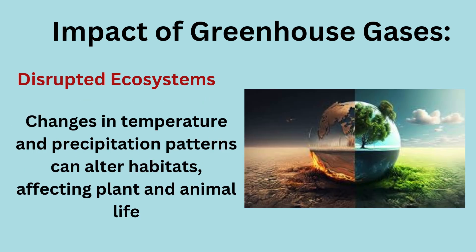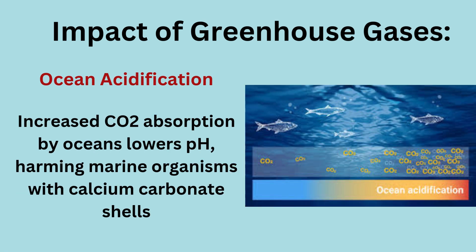Disrupted ecosystems: changes in temperature and precipitation patterns can alter habitats, affecting plant and animal life. Ocean acidification: increased CO2 absorption by oceans lowers pH, harming marine organisms with calcium carbonate shells.